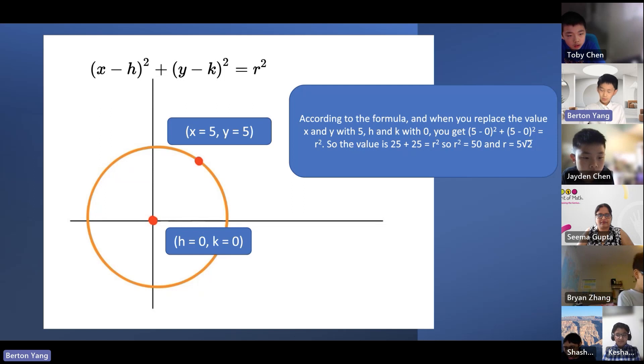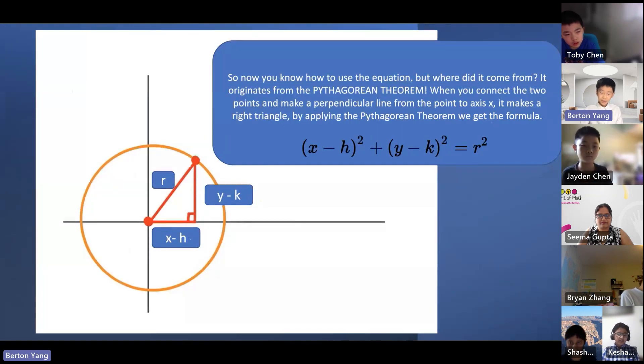Here's an example of the formula. The coordinate of a point on the circle is 5, 5 and the center point is 0, 0. How do you calculate the radius of the circle? According to the formula, when you replace the value x and y with 5, h and k with 0, you get 5 minus 0 squared plus 5 minus 0 squared equals r squared. So the value is 25 plus 25 equals r squared. So r squared equals 50 and r equals 5 square root 2. So now you know how to use the equation, but where did it come from? It actually originates from the Pythagorean theorem. When you connect the two points and make a perpendicular line to axis x, it makes a right triangle. And by applying the Pythagorean theorem, we get the formula.